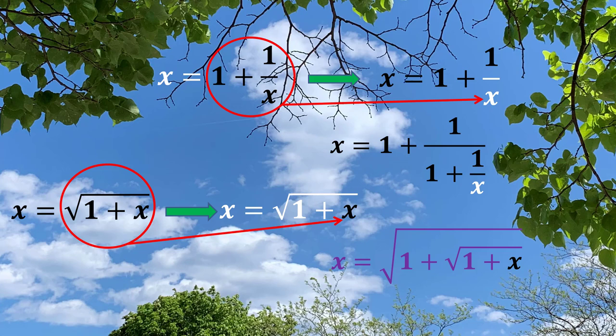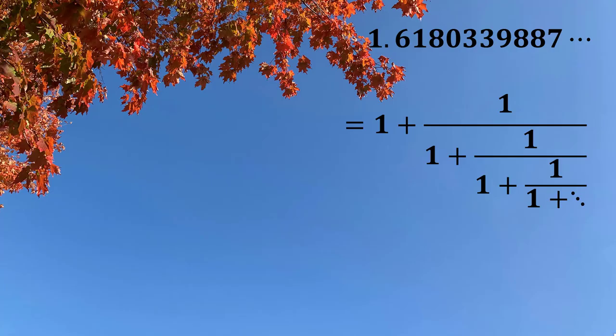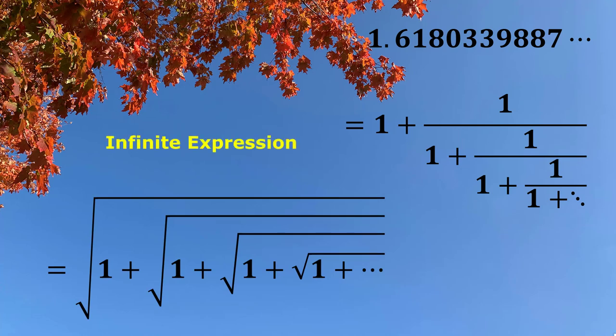Think about if we have this process going on, it turns out infinite expression. That is golden ratio, or the number 1.618 stands for. We have two infinite expressions.